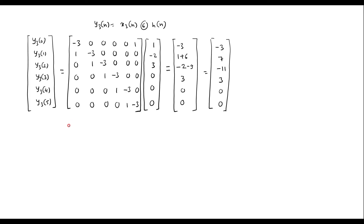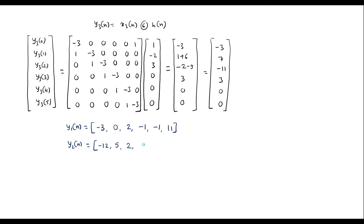Now let us write all three output sequences together. y1 of n is: minus 3, 0, 2, minus 1, minus 1, 11. y2 of n is: minus 12, 5, 2, minus 8, 8, 13. y3 of n is: minus 3, 7, minus 11, 3, 0, 0.